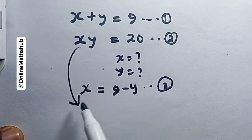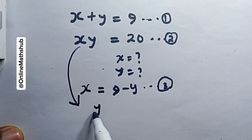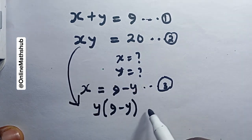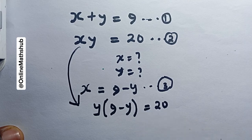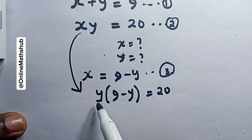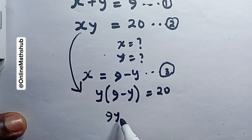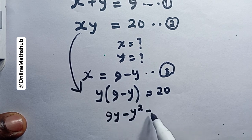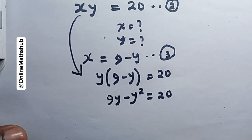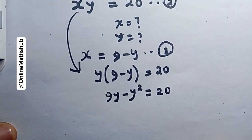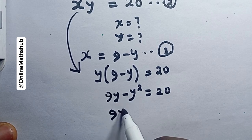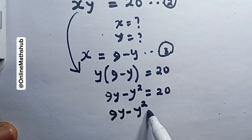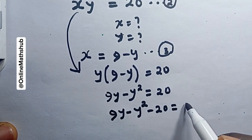Substituting, equation 2 becomes y times (9 minus y) equals 20. Opening the bracket: 9 times y gives 9y, and y times y gives minus y squared, so 9y minus y squared equals 20. Bringing 20 to the left-hand side by subtracting 20 from both sides gives 9y minus y squared minus 20 equals 0.